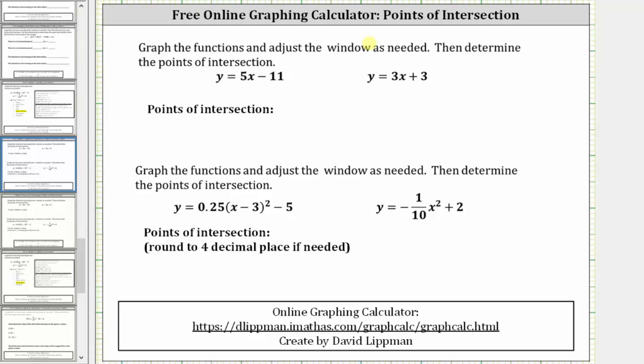For the first example, we have y equals 5x minus 11 and y equals 3x plus 3. Remember, if this was a system of equations, the point of intersection would represent the solution to the system.